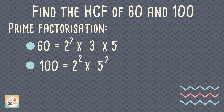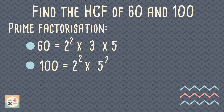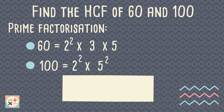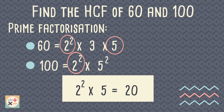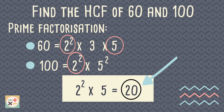Next, we take the lowest powers of factors that occur in both numbers and multiply these together. The resulting number is the highest common factor.